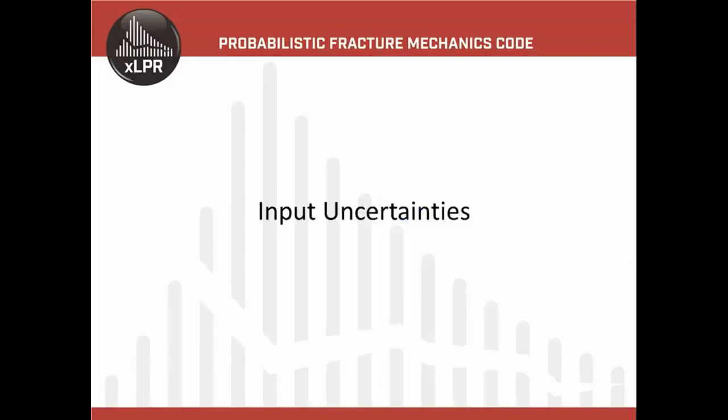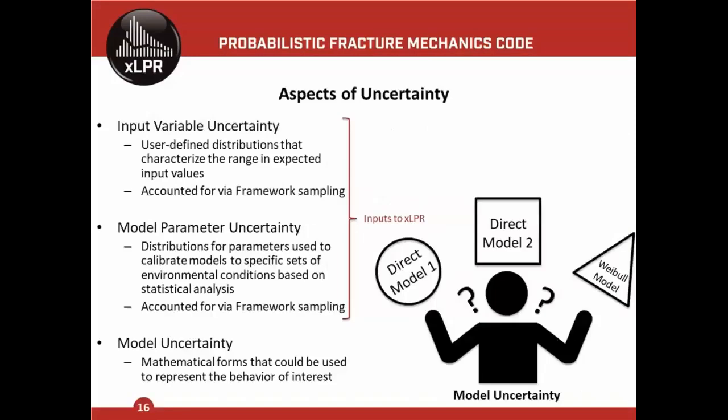Let's move on to input uncertainties. There are different ways to classify inputs: input variable uncertainty and model parameter uncertainty. These are what the framework samples to represent uncertainties in XLPR. There's also model uncertainty, which refers to the different equations used to represent a physical phenomenon. A good example is crack initiation models — XLPR has three available: direct model one, direct model two, and the Weibull model.